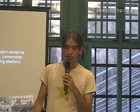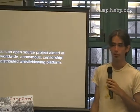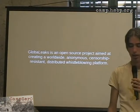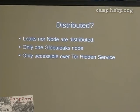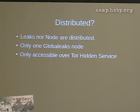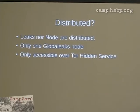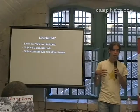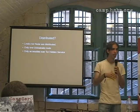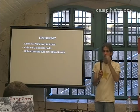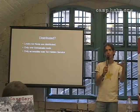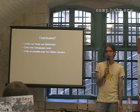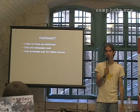So GlobaLeaks is an open source project creating a worldwide, anonymous, censorship-resistant, distributed whistleblowing platform. However, the leak nodes are not really distributed — you only have one installation. When that node goes down or gets raided, you're done. Maybe they mean it's distributed because it goes through the Tor network. At some point they want to create multiple GlobaLeaks instances that sync together, but at the moment the distributed thing is not really possible.